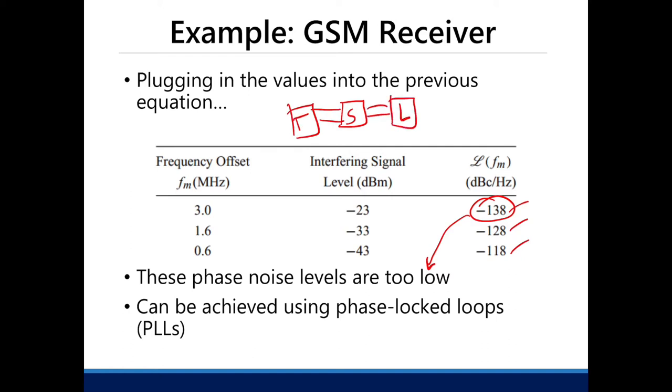The result of a basic transistor oscillator is an oscillation, but it's not stable yet — it's very noisy.